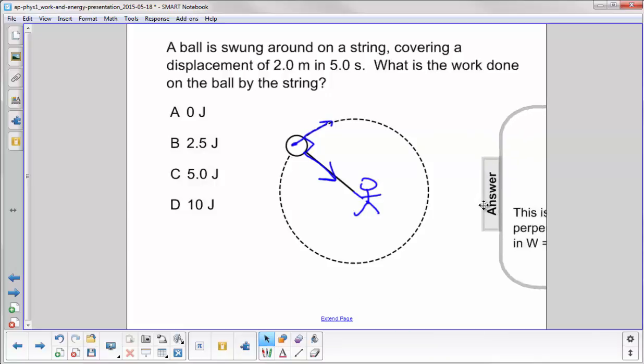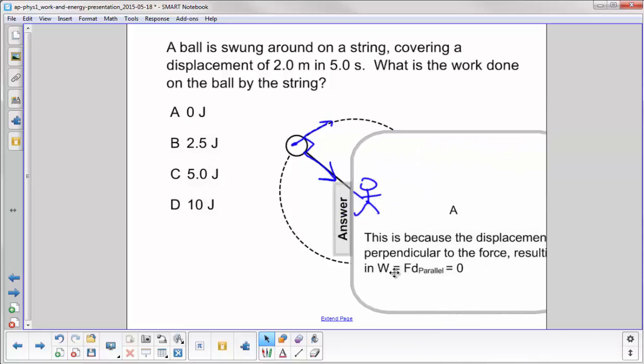So what happens here? Our equation, work equals force times the distance parallel, we have no component of the force in the direction of the ball's motion. So FD parallel is going to equal zero. No work is done on the ball by the person spinning it around in a circle.